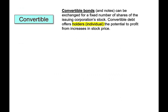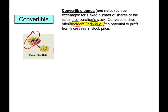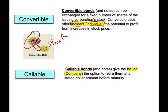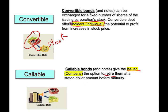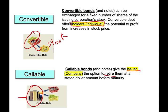We also have convertible bonds versus callable bonds. Convertible means you can exchange the bond for a fixed number of shares issued by the corporation. If you have a bond but want to convert it into stock, the holder has the potential to make a lot of profit if the stock price increases. Callable notes, on the other hand, give the issuer the option to retire — to buy back — the bond at some specific dollar amount. The company determines they want to buy back your bond, and you have no option.